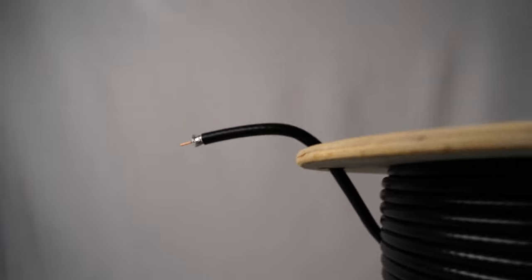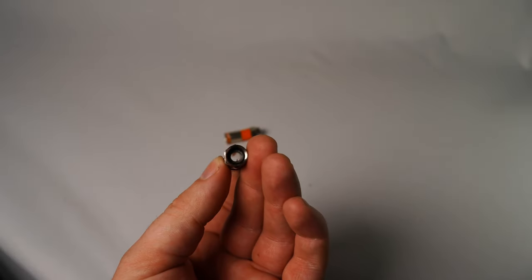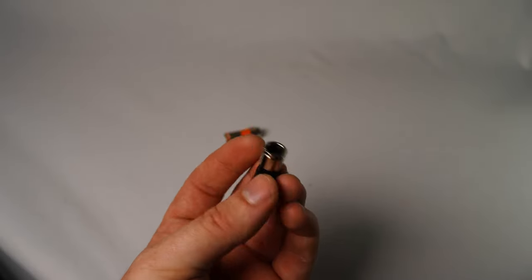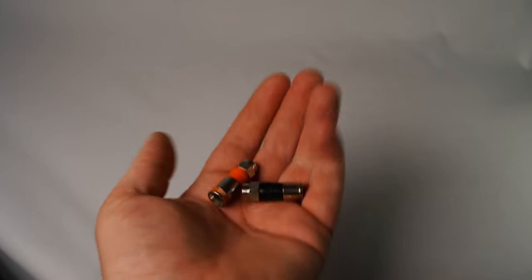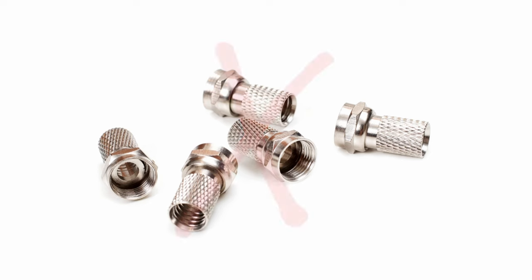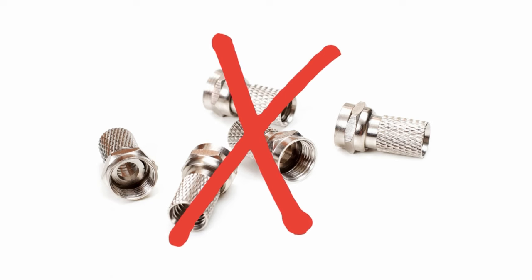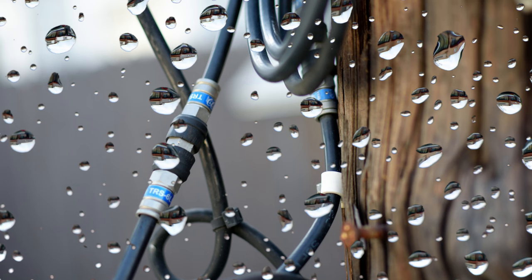On each RG6 cable end we need to attach F type connectors. In the field we use compression fittings. I would avoid using twist on F type connectors as these have a weak and unsecured connection. Remember that most F type connections are not water resistant and should be installed in an appropriate watertight container if used outdoors.